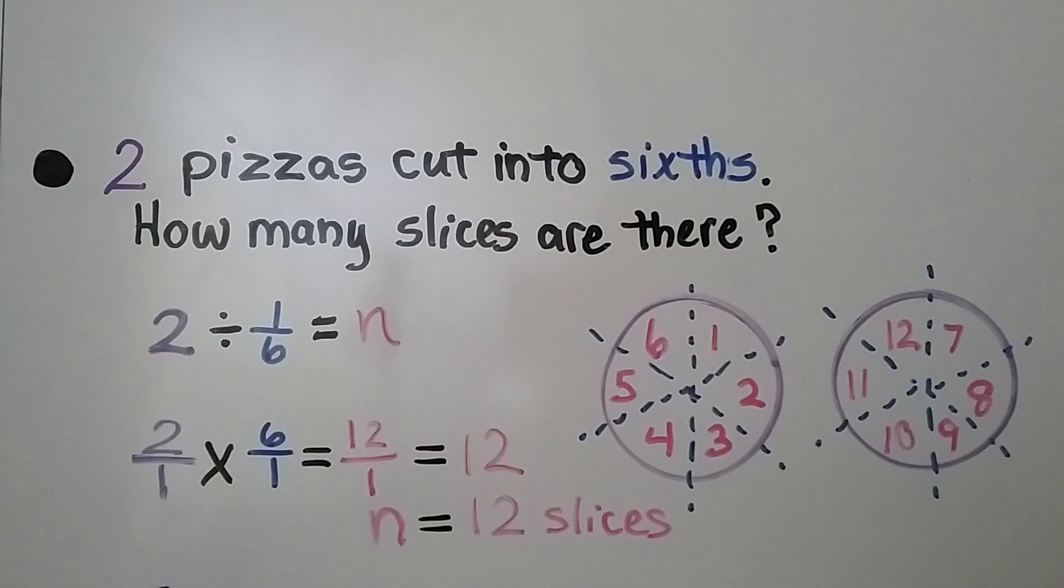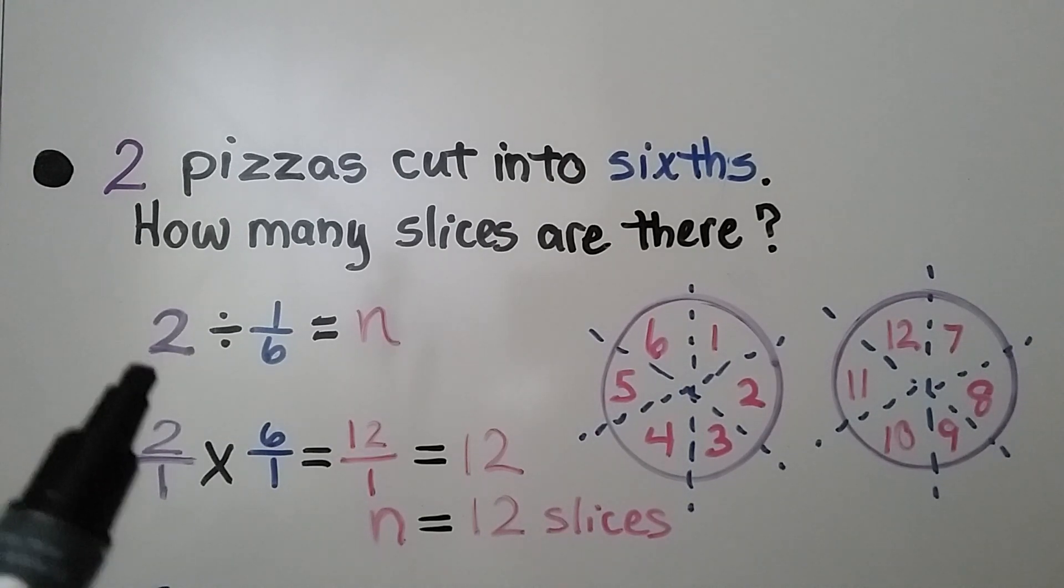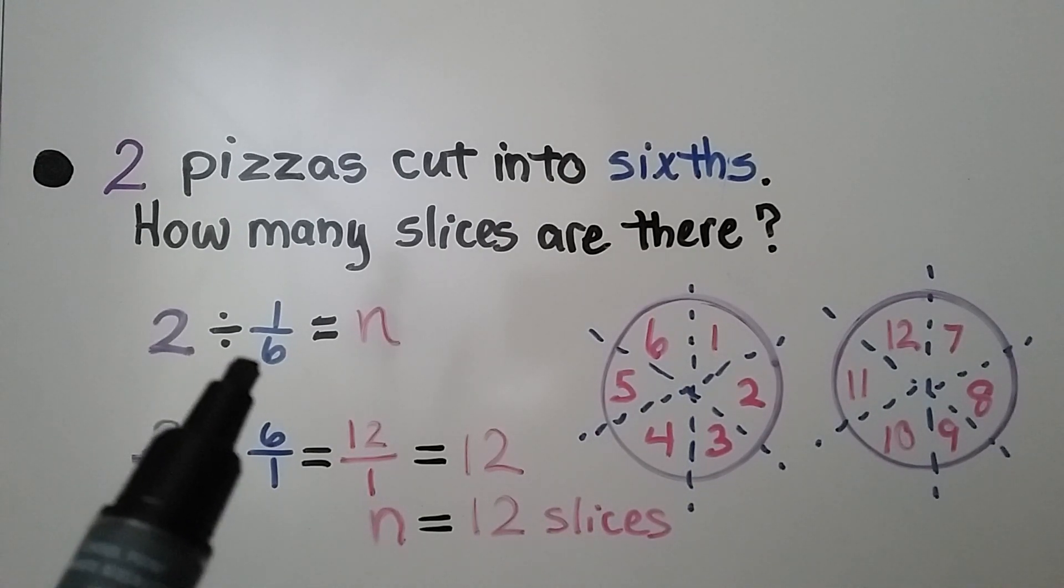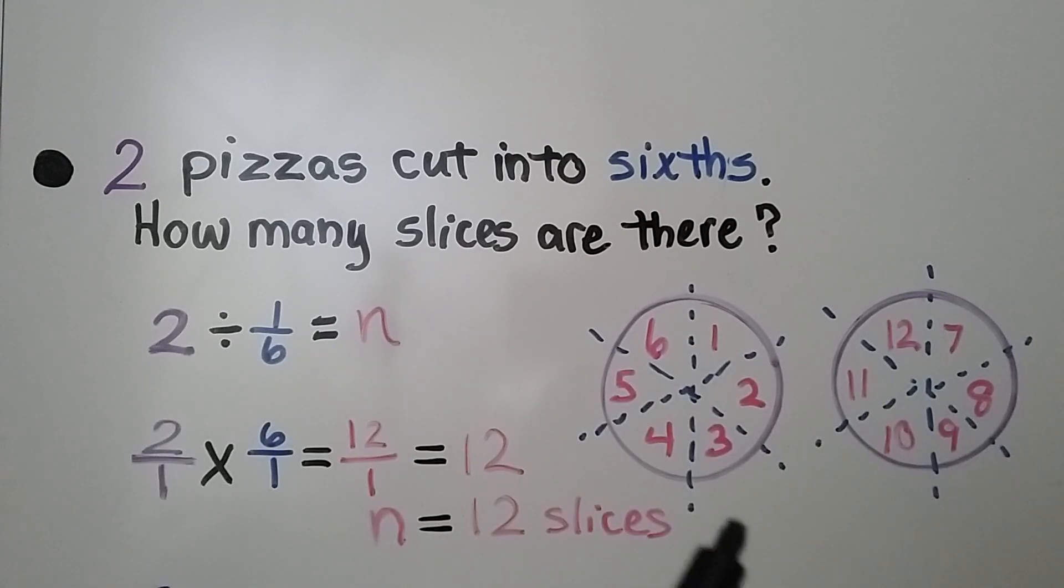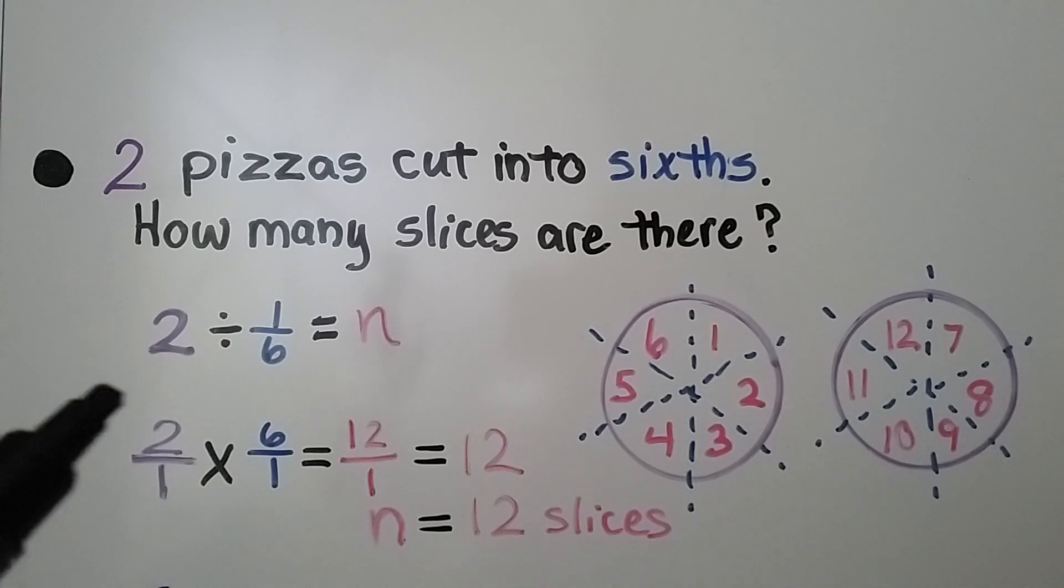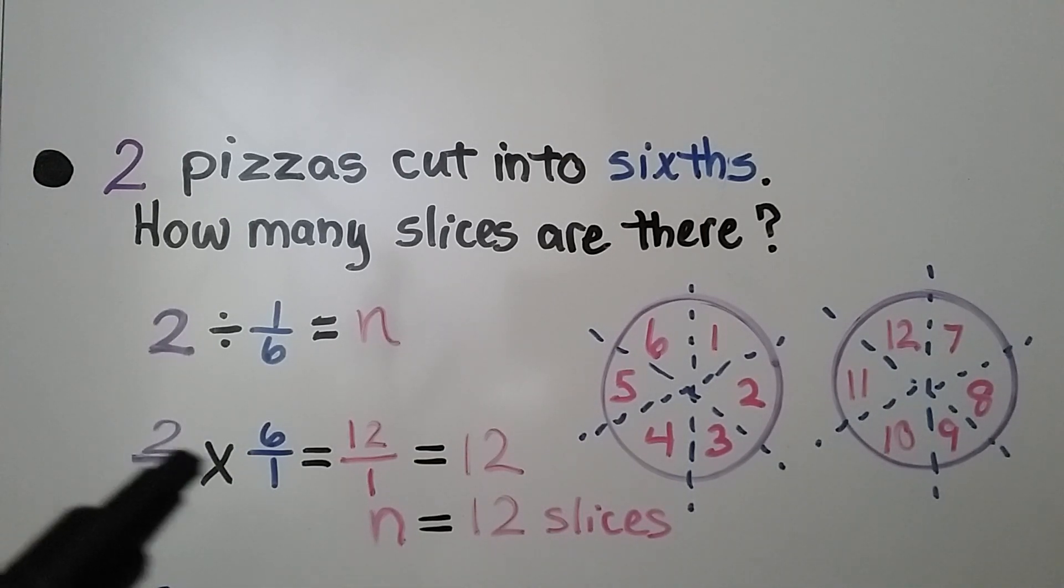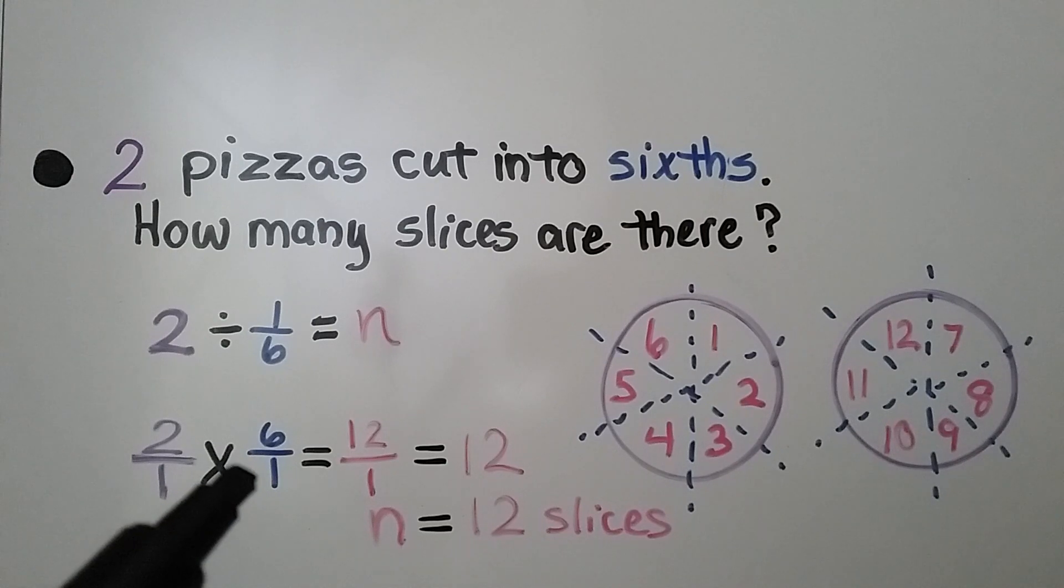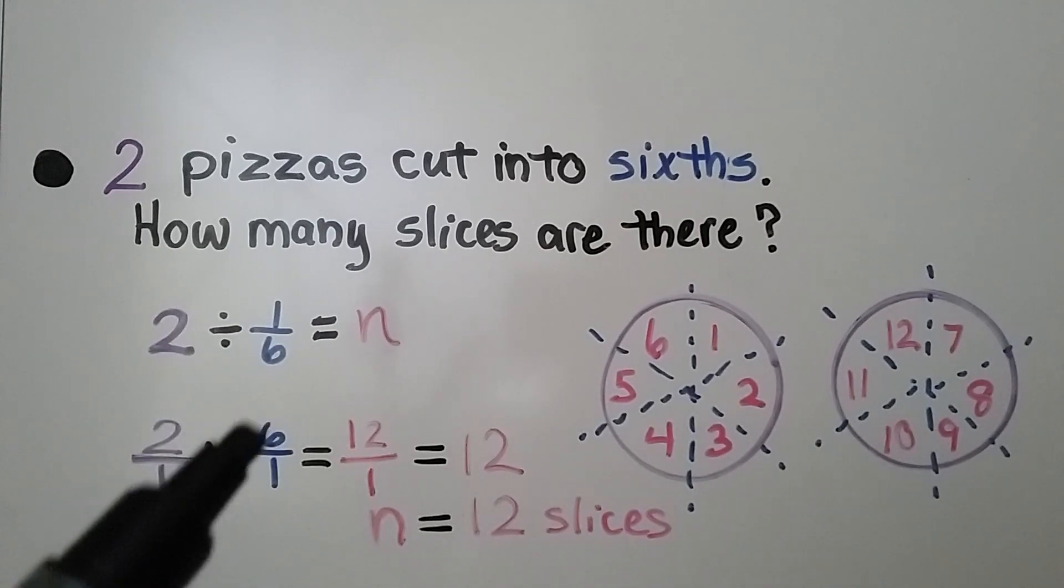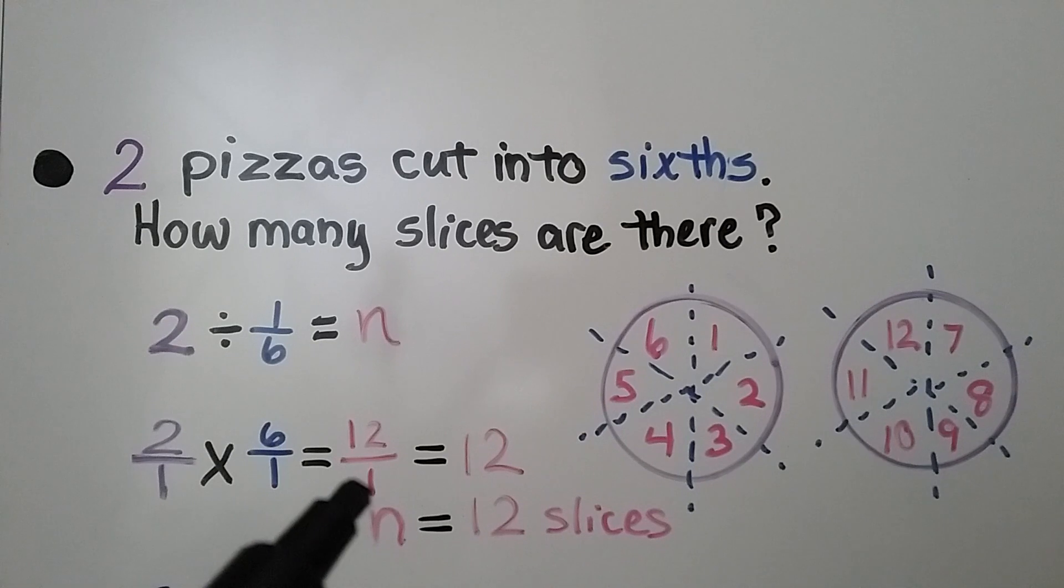Two pizzas cut into sixths. How many slices are there? That would fit the equation 2 divided by 1 sixth. We have two whole pizzas that were cut into sixths. We have 12 slices. We can multiply 2 as a fraction, as 2 over 1, multiply it by the reciprocal of 1 sixth, which is 6 over 1. We get 12 over 1, which is equal to 12 whole. So n would be equal to 12 slices.